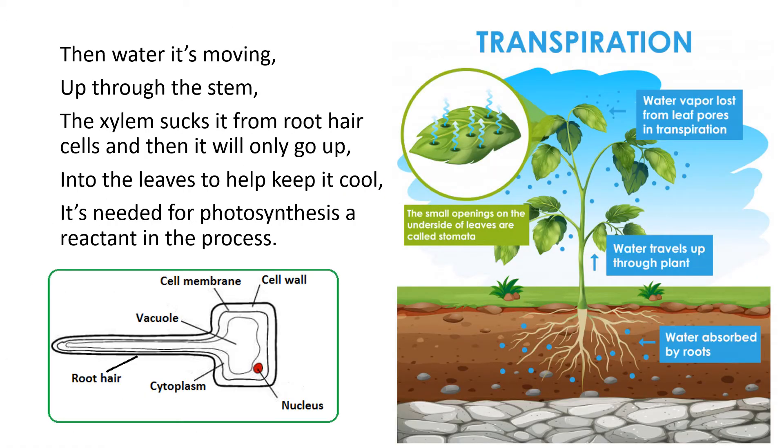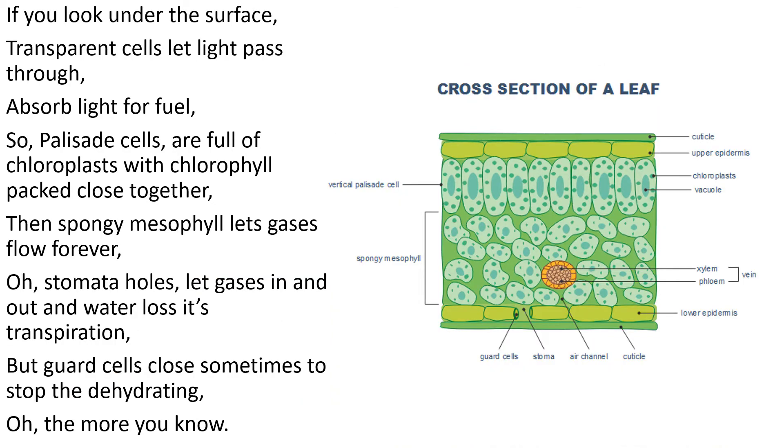Then water it's moving up through the stem. The xylem sucks it from root hair cells and then it will only go up into the leaves to help keep it cool. It's needed for photosynthesis, a reactant in the process.